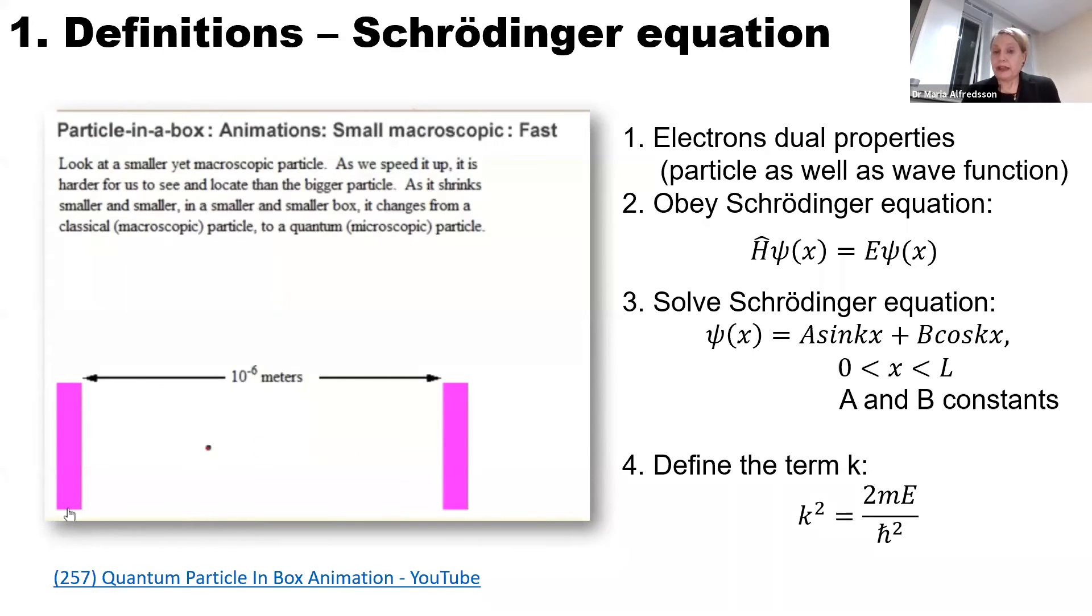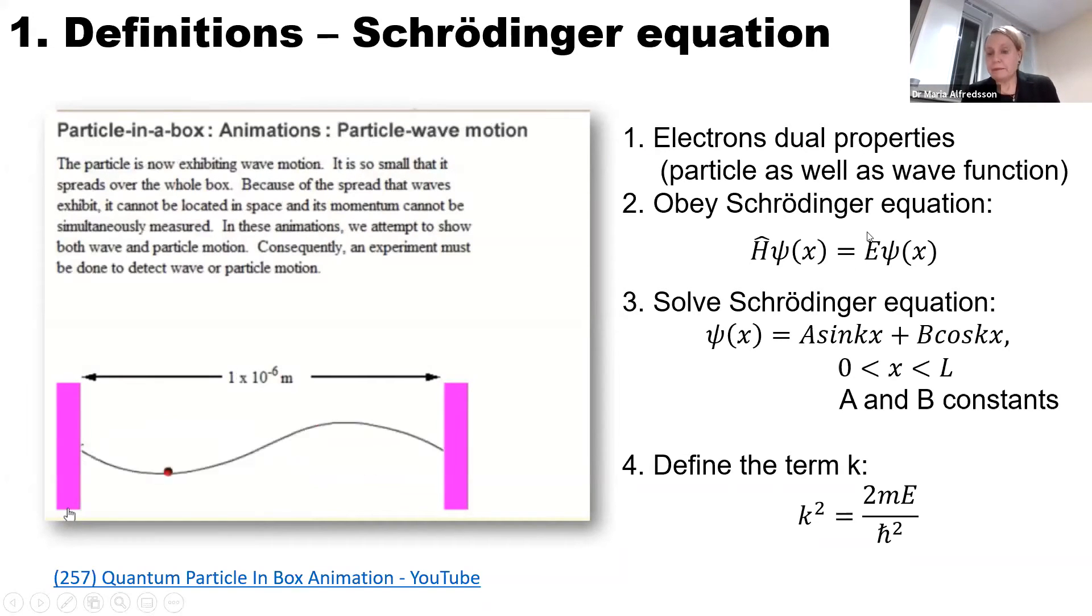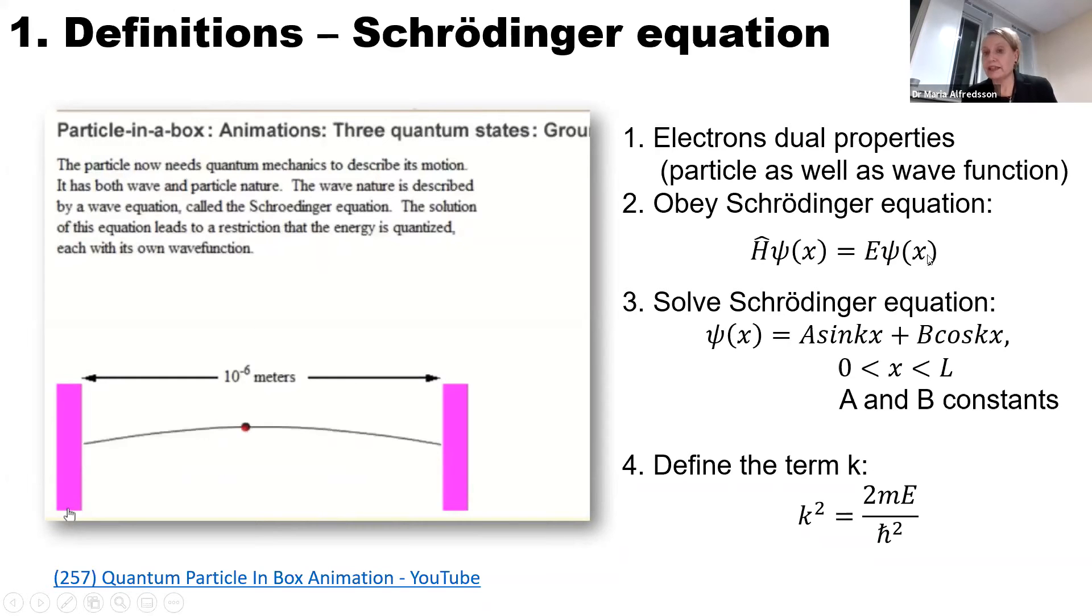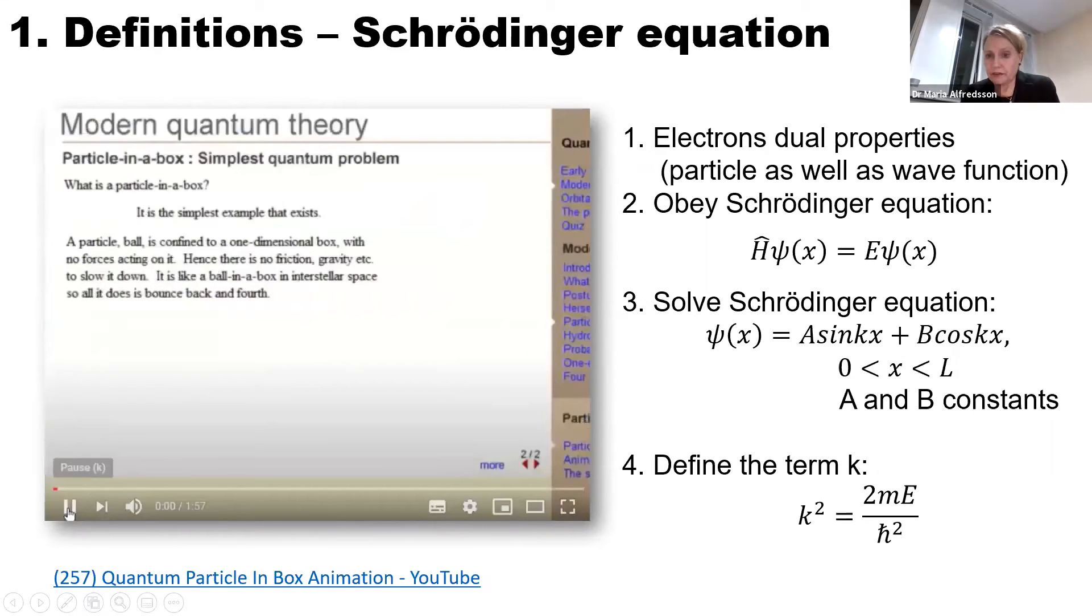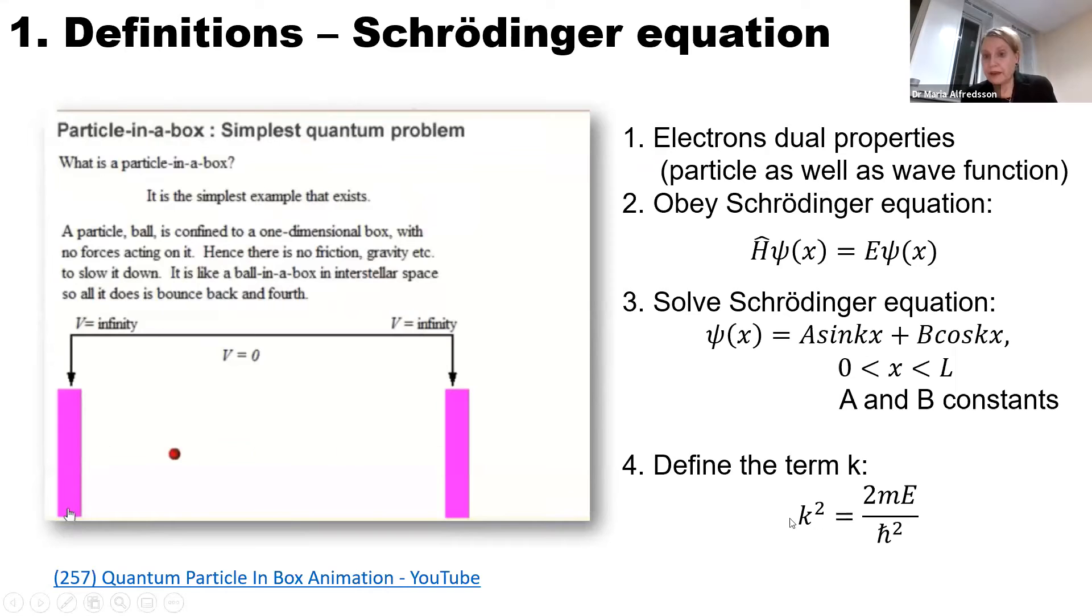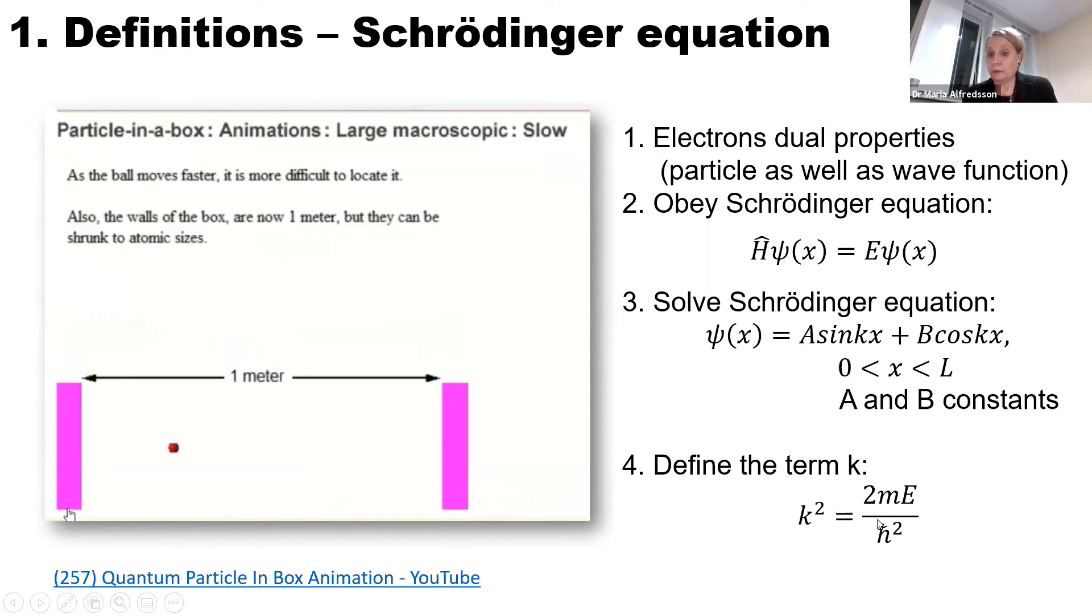It was also found that they obey an equation described by Schrödinger, so it's called Schrödinger's equation. It depends on this energy, but it also depends on this function here, which is called psi. In this case, it depends on x, which is the one dimensional box, and psi is our wave function. Schrödinger showed that the psi function can be described by a sinus function and a cos function, where A and B are constants. Further, it was shown that this term k has a specific value that depends on the mass of the particle, the energy, and Planck's constant h-bar.